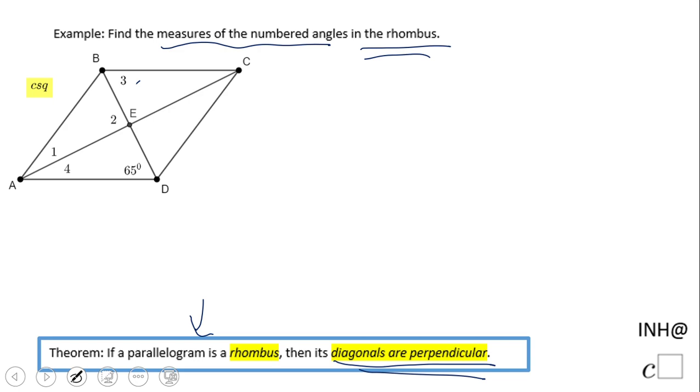So basically here we know that BD is perpendicular to AC, which makes all these angles here 90 degrees. So the measure of angle 2 is 90 degrees. Very fast - you can find the measure of these types of angles because the diagonals are perpendicular.